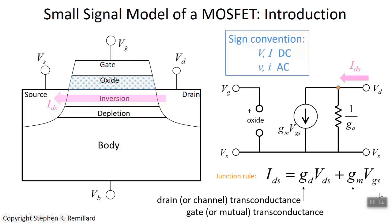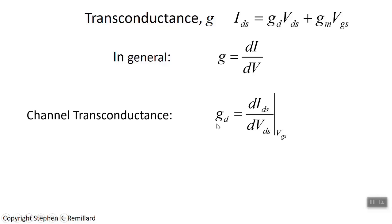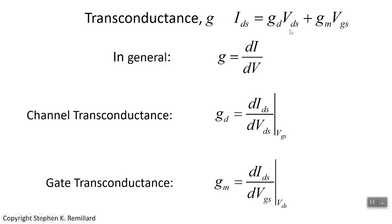What we're going to do over the next several lectures is turn this into a usable expression. The definition of conductance is current over voltage; transconductance is a dynamic conductance — instead of just current over voltage, it's the derivative di/dv, a change in current for a change in voltage. The channel transconductance G_D is the derivative of the drain-source current with respect to drain-source voltage at constant gate-source voltage. The mutual transconductance G_M is the derivative of drain-source current with respect to gate-source voltage at constant drain-source voltage. These are taken at a fixed value of the other voltage — those studying thermodynamics will recognize this variational approach.